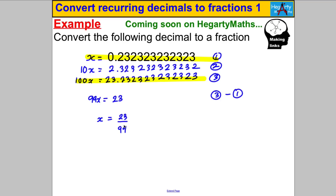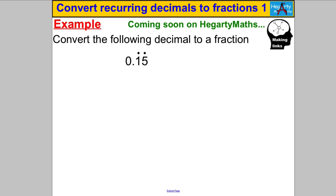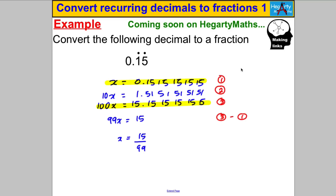There's one more example at the end for you to try — pause and have a go! Working through exactly the same method, X = 15/99. We can simplify this: the highest common factor of 15 and 99 is 3, so dividing top and bottom by 3 gives 5/33. That's the answer. Thanks for watching!